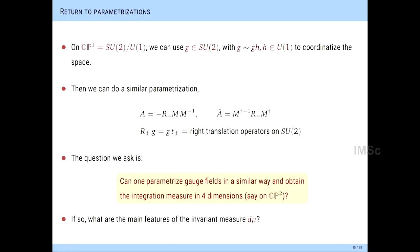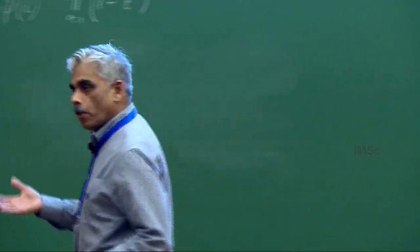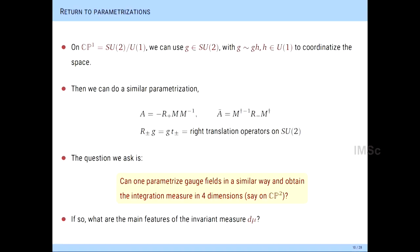Now let's try to jump to four dimensions. Instead of looking at the complex plane, let's look at CP1 — the complex projective space, which is the sphere SU(2) mod U(1). The parameterization for gauge fields can be written again in terms of a matrix M, but with translation operators R-plus and R-minus, which are right translations on the group. One can parameterize the CP1 manifold by an SU(2) group element and use that as a coordinate. Can we do that in 4D?